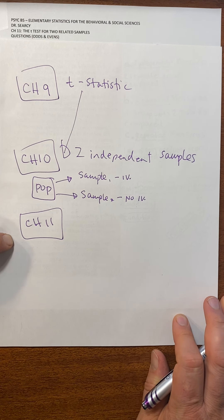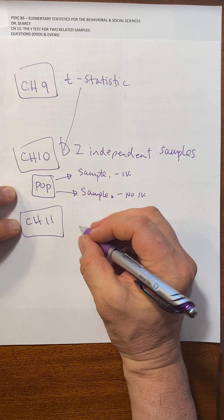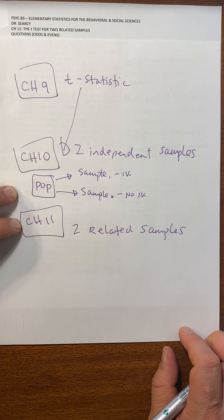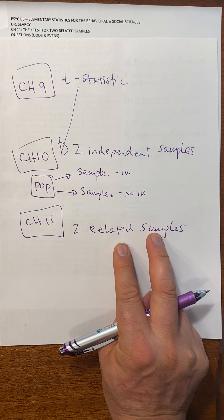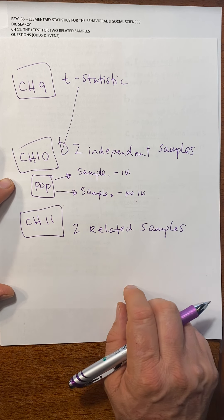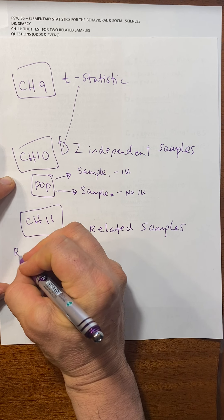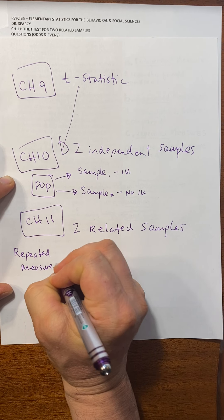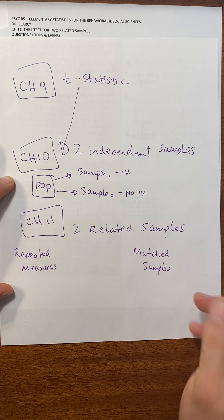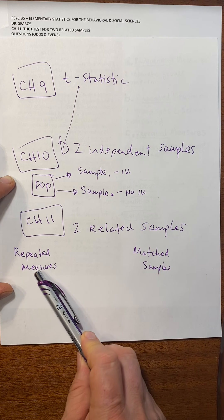So then we moved into Chapter 11, and we continue talking about the T-Statistic. But now in Chapter 11, the type of statistic we're going to be using is one where we're working with two related samples. The idea here was that these two related samples are going to be treated similarly to each other in some way — unlike the two independent samples. With the two related samples, we said that there are two different ways that we could conduct this kind of study. One way was where we could conduct a repeated measures design test, and the other way was where we could conduct a matched samples test.